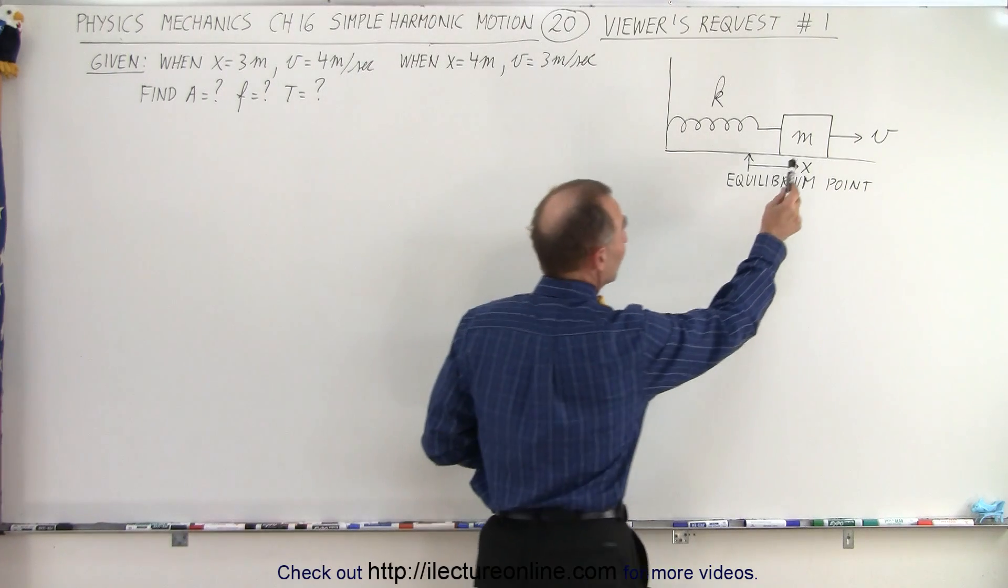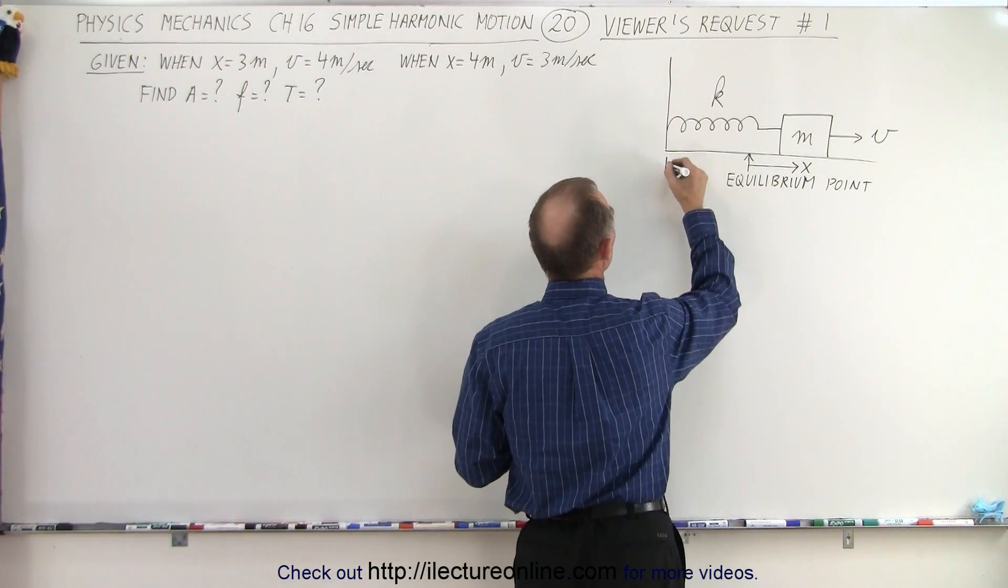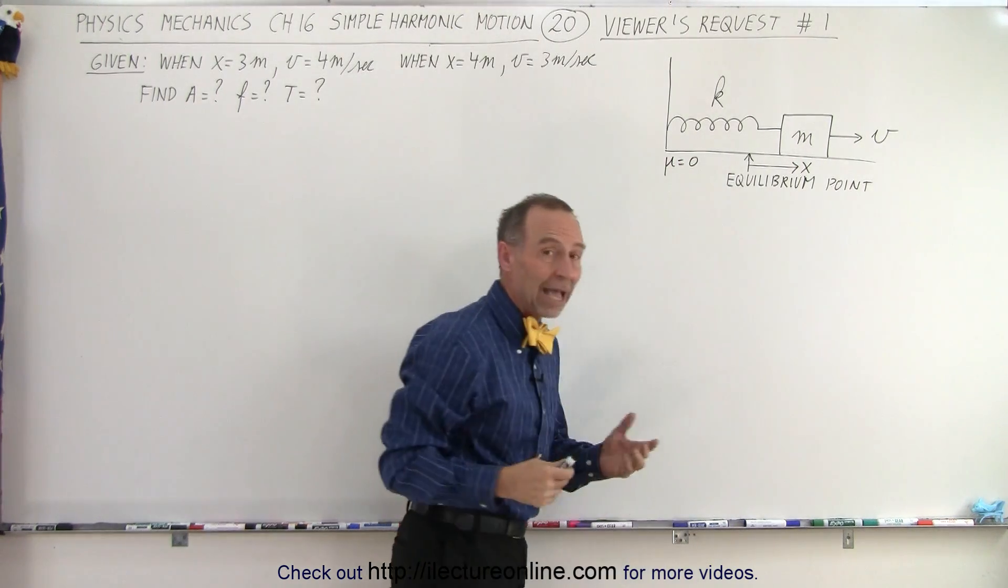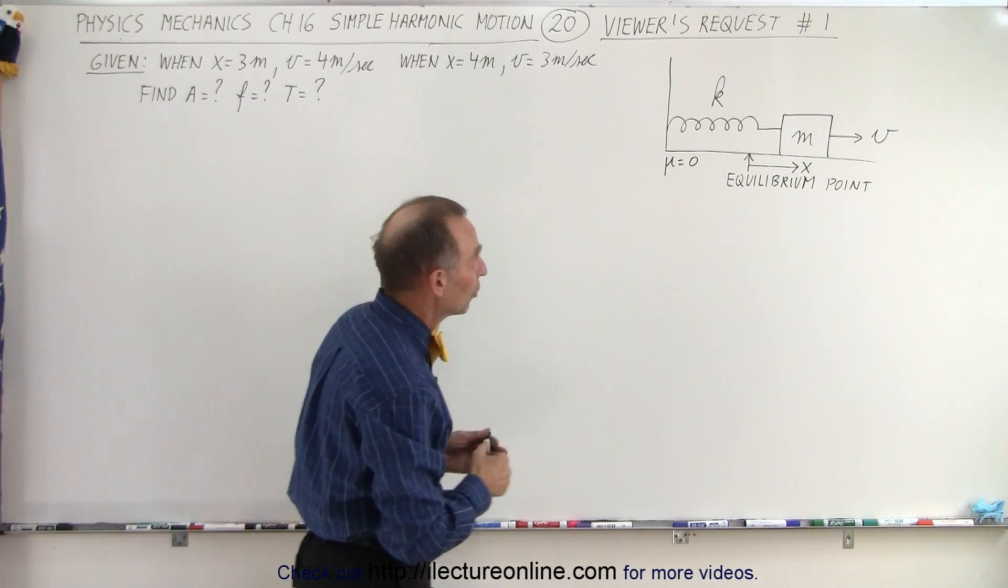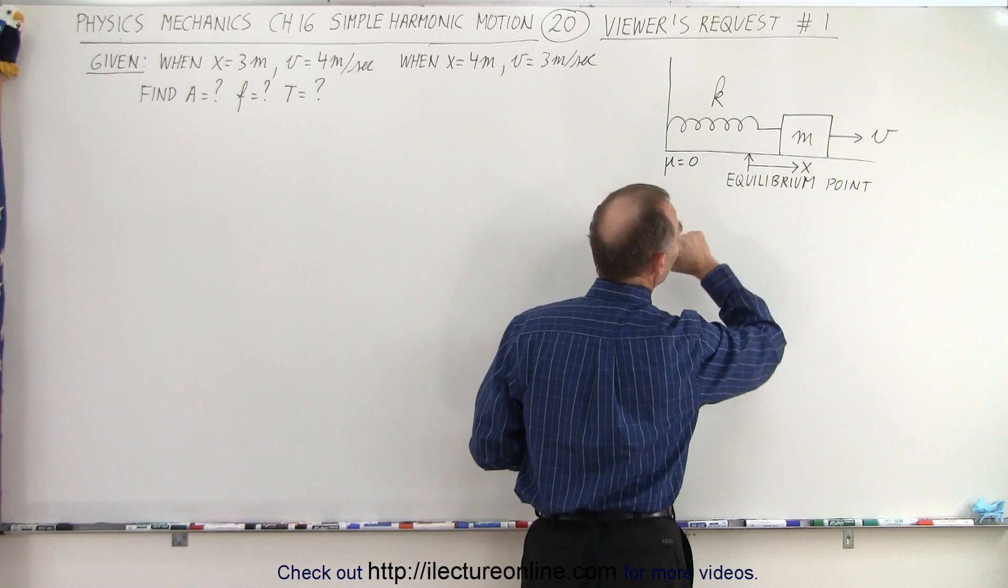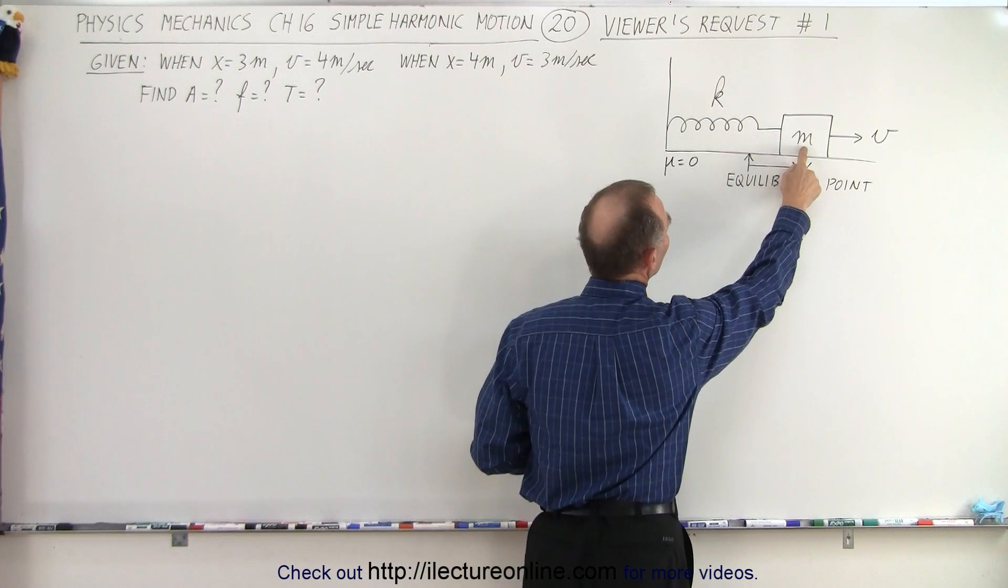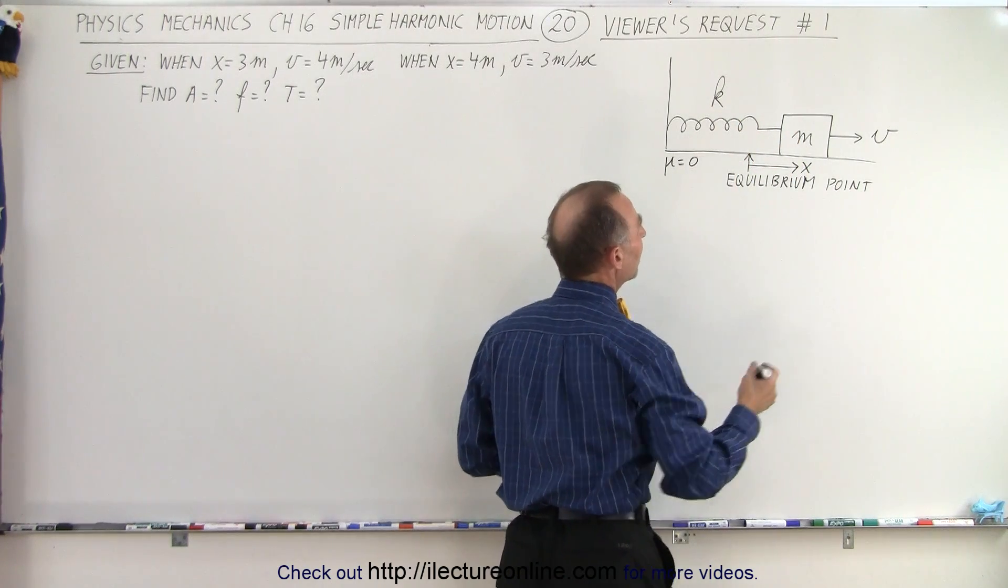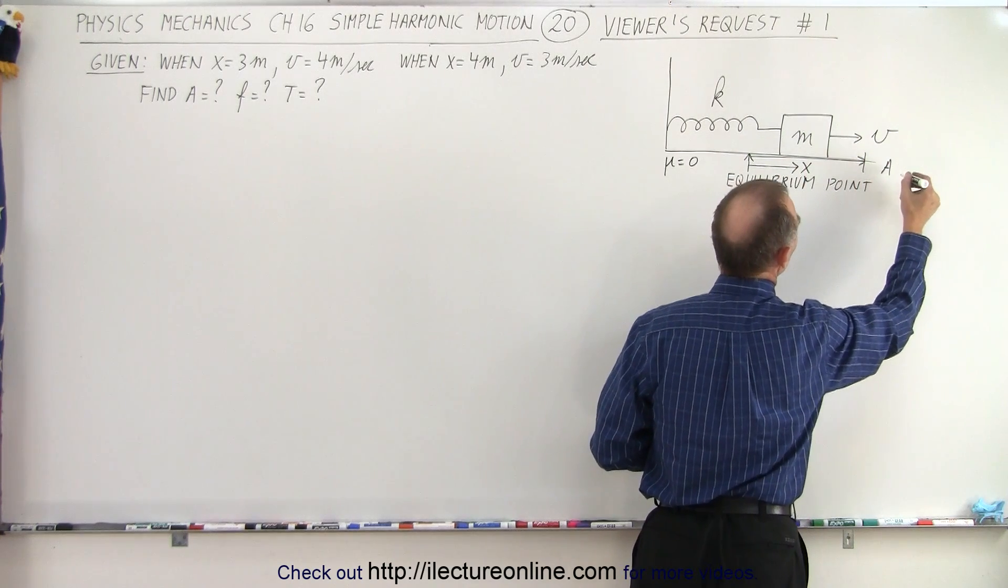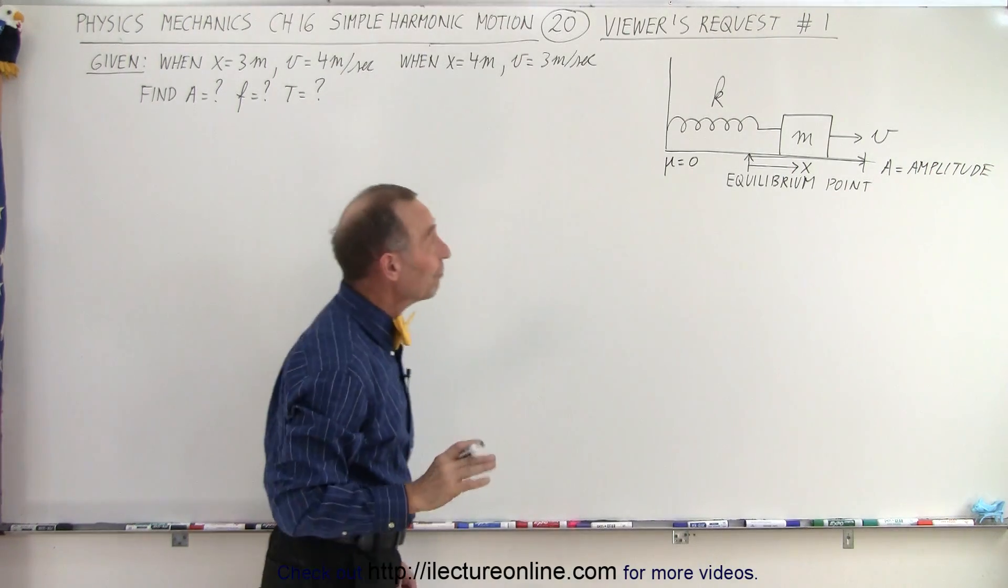Notice we have an object with mass m attached to a spring, and let's say there's no friction, so mu equals zero, and the object is going back and forth like we have in the case of simple harmonic motion. You can see here that the object is past the equilibrium point, a distance x away from the equilibrium point, moving at velocity v. The mass is equal to m, the spring constant is equal to k, and presumably the maximum displacement will be equal to a, which is of course the amplitude.